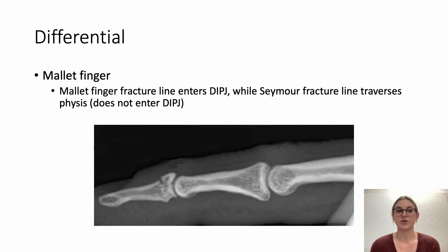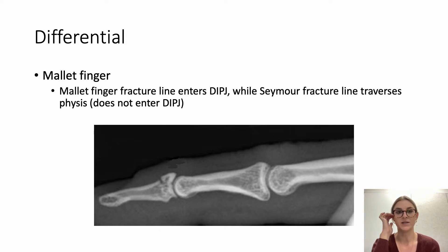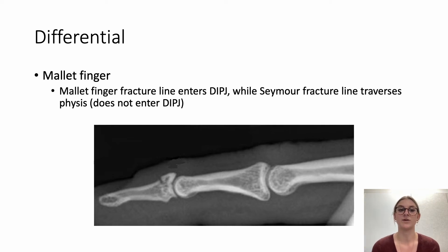The key differential for this injury is a mallet finger. The difference is that the fracture line in a mallet finger enters the DIPJ, while in a Seymour fracture the fracture traverses the physis but does not actually enter the joint.